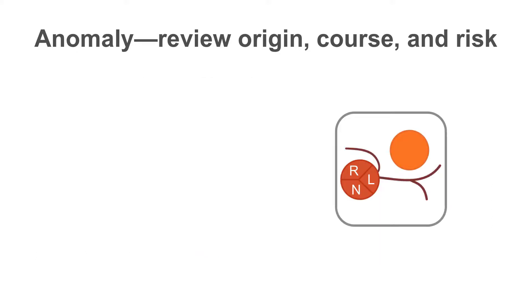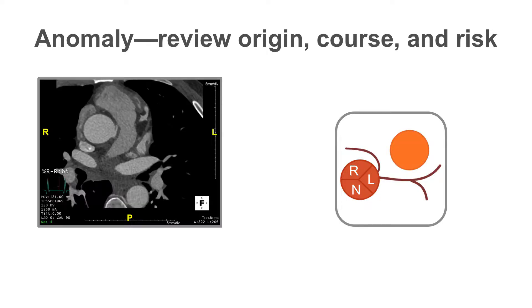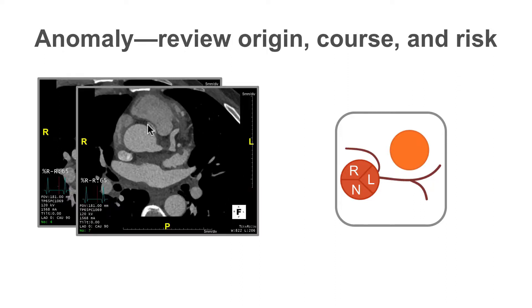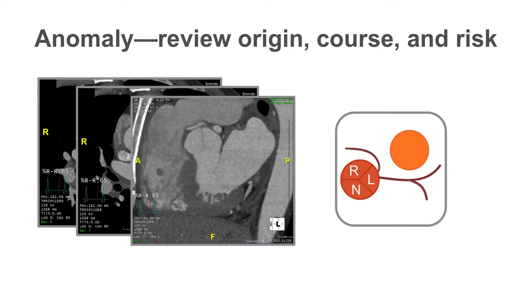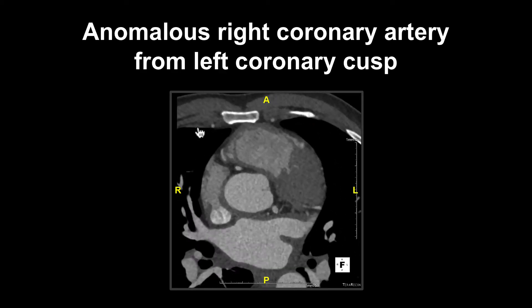This graphic demonstrates the course of the anomalous right coronary artery. We can see that it arises from the left coronary cusp before following an inter-arterial course — inter-arterial because it lies between the main pulmonary artery and the ascending aorta. For these types of coronary anomalies, it is important to evaluate whether they pose a specific risk to the patient. Risk can be defined using anatomical parameters: is there an acute angulation, is there a slit-like orifice, and does the vessel follow an intramural course? This is a true example of a malignant right coronary artery because it follows an inter-arterial course above the level of the pulmonary valve.